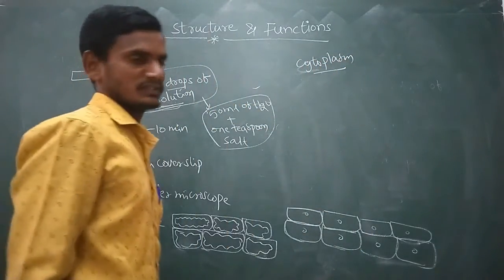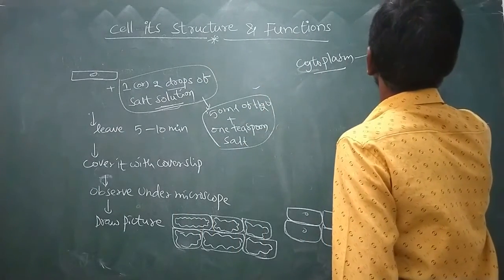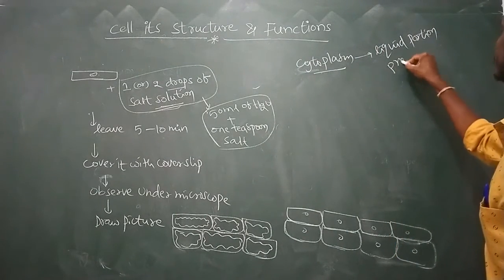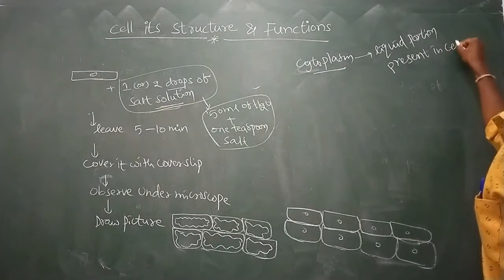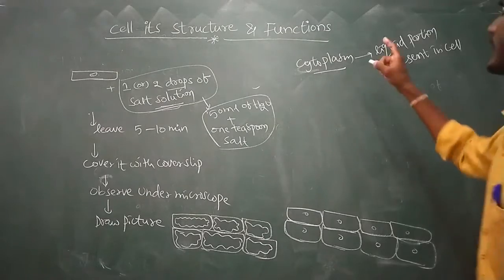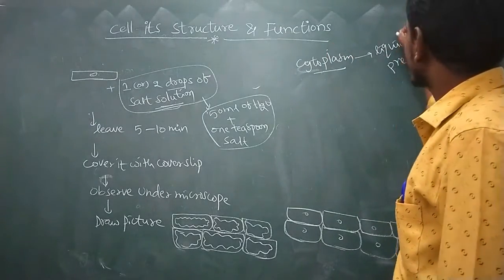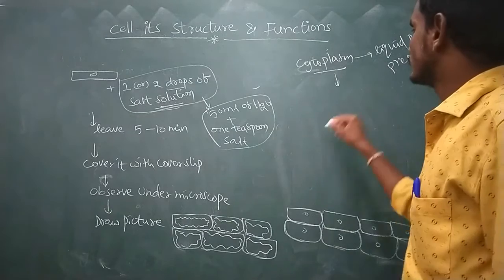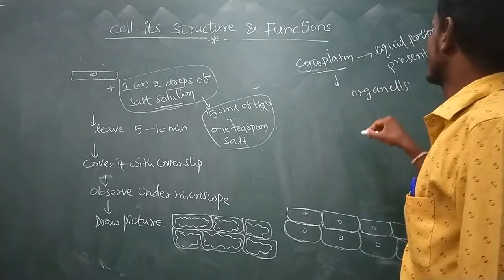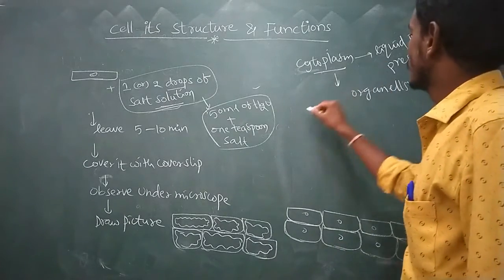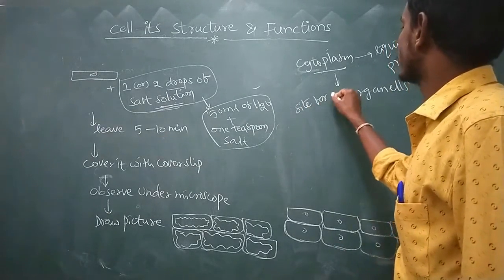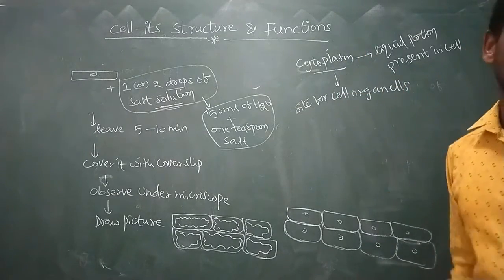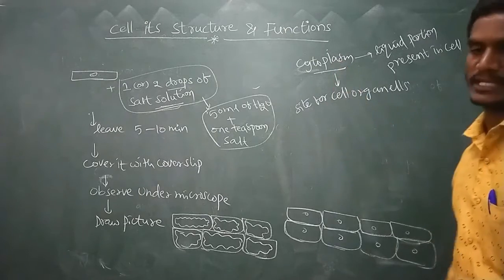The liquid portion present inside the cell is called cytoplasm. The cytoplasm is a liquid part, and it is the site for all cell organelles — all cell organelles float and are arranged in the cytoplasm.